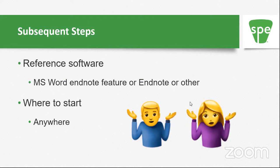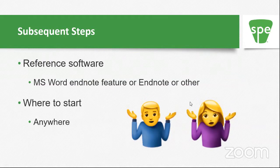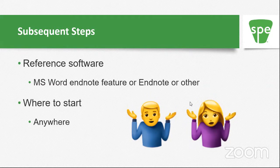A question I get asked a lot is: where should I start writing? I always tell people wherever you're most comfortable. I've actually started different places — with the abstract, the experimental, or the results and discussion. The only place I've never started is the conclusions. Do I outline? No, but some people do. One thing I like to do is start with the easiest part first — that gets me going.